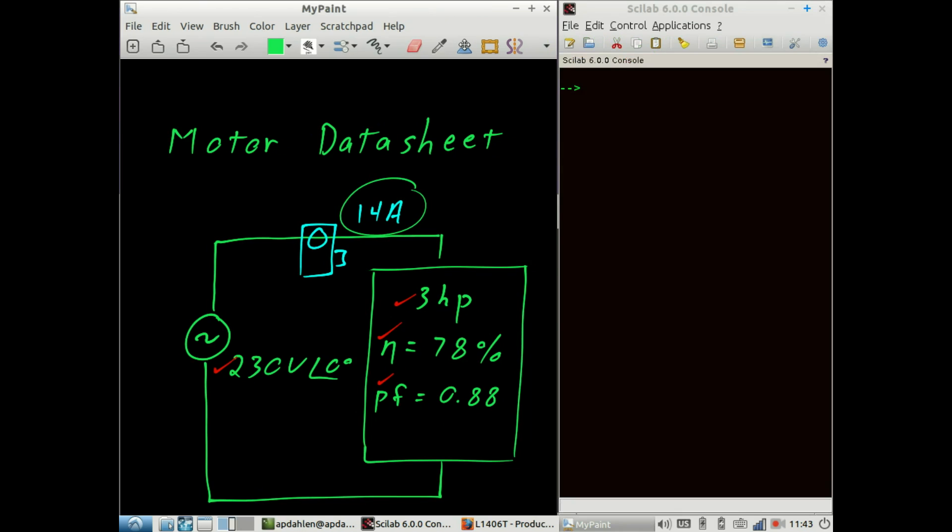Now we're going to shift over to Scilab and show how the calculations are performed. Let's start by entering some of the values. The voltage source is equal to 230. Power out is equal to 3 horsepower. Efficiency is equal to 0.78. Power factor is equal to 0.88.